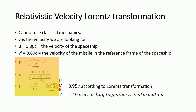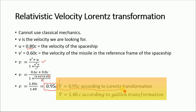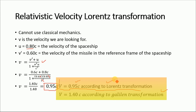The velocity observed from Earth is 0.95c according to Lorentz transformation, while it would be 1.4c according to Galilean transformation. Galilean transformation is not valid here because it surpasses the speed of light, whereas 0.95c is less than the speed of light and is valid. Galilean transformation is valid only for inertial frames of reference, but here we are dealing with relativity, where we must use the Lorentz transformation equations.